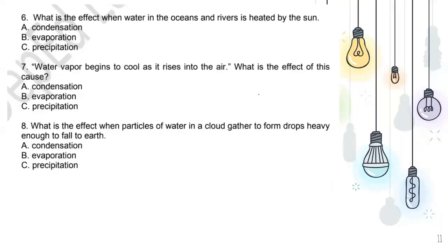Let us now answer the questions. Number six: what is the effect when water in the oceans and rivers is heated by the sun? A. Condensation, B. Evaporation, C. Precipitation. Number seven: water vapor begins to cool as it rises into the air — what is the effect of this cause? A. Condensation, B. Evaporation, C. Precipitation. Number eight: what is the effect when particles of water in a cloud gather to form drops heavy enough to fall to earth? A. Condensation, B. Evaporation, C. Precipitation. If you need more time, you can pause the video.